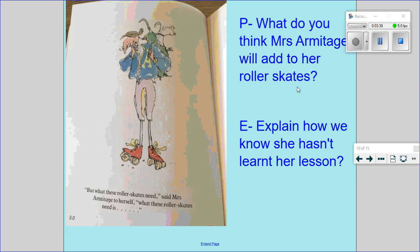What do you think Mrs. Armitage will add to her roller skates? How do you know she hasn't learnt her lesson from before with the bike? How do you know she's not learnt her lesson? Have a little think.